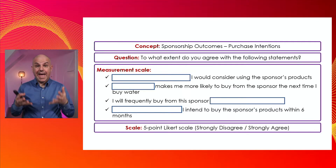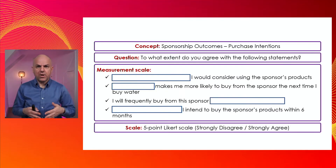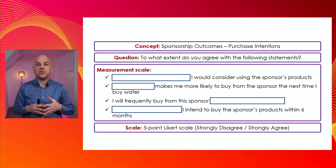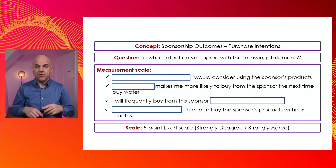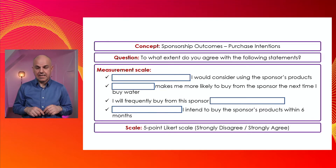You get the actual statement — the purchase intention part: 'I would consider using the sponsor's products,' 'makes me more likely to buy from the sponsor the next time I buy water,' 'I will frequently buy from the sponsor,' and 'I intend to buy the sponsor's products within six months.' The scale, for your knowledge, was a five-point Likert scale from strongly disagree to strongly agree.